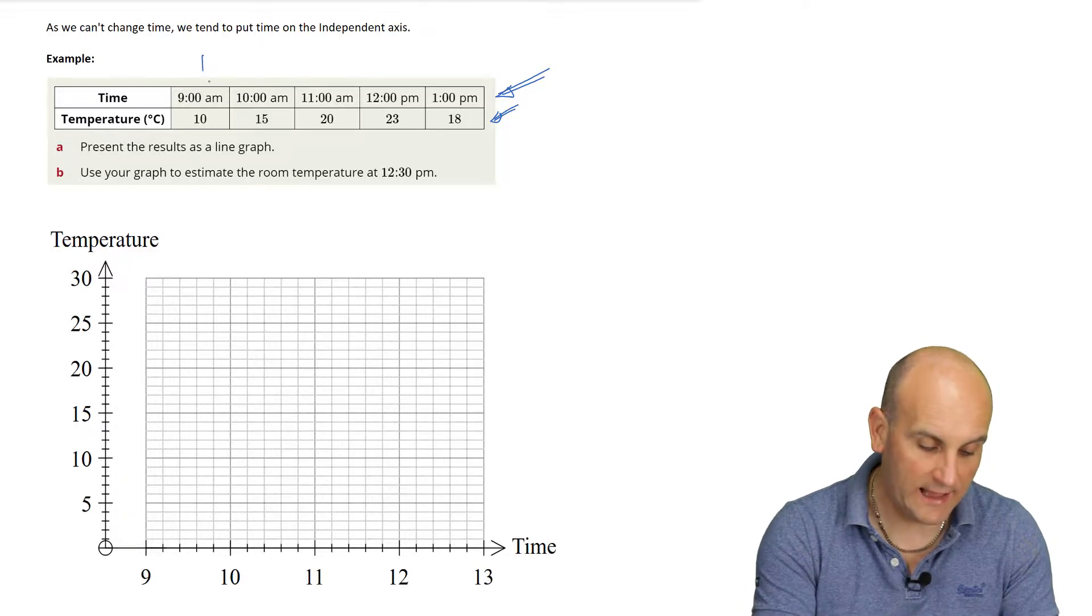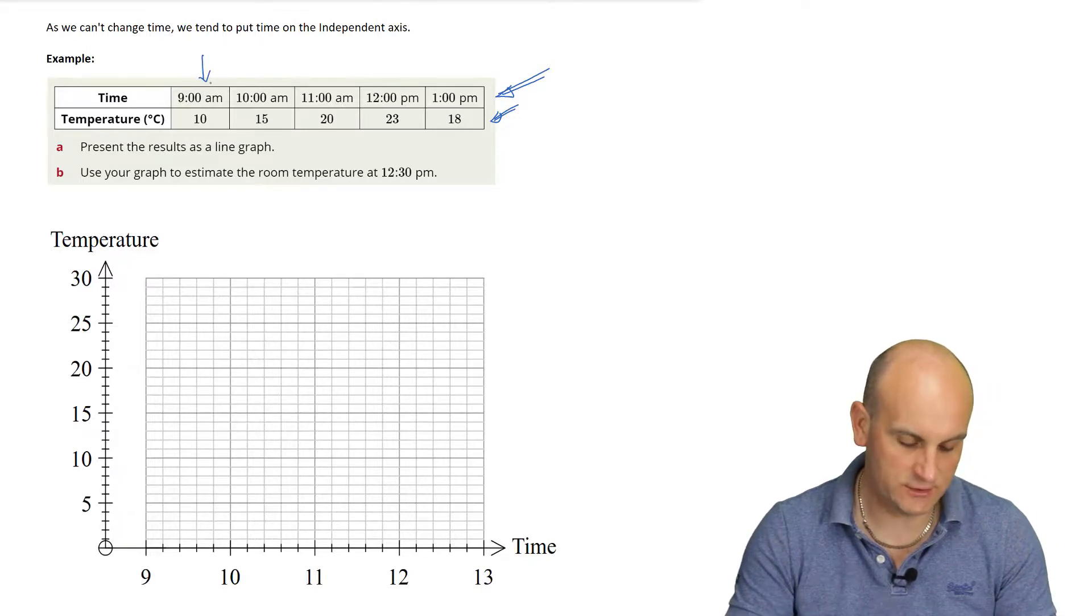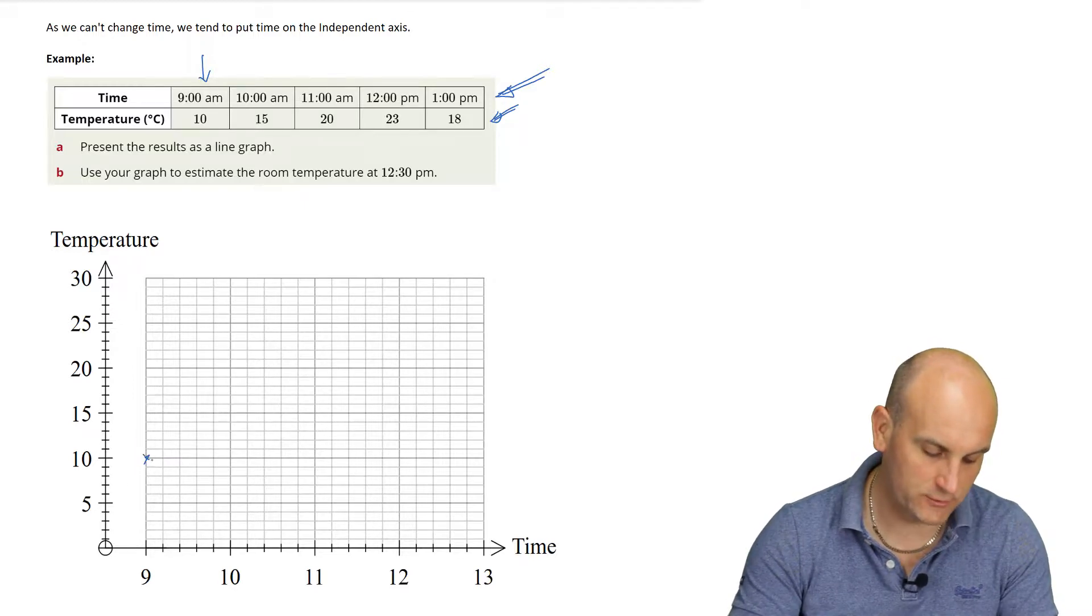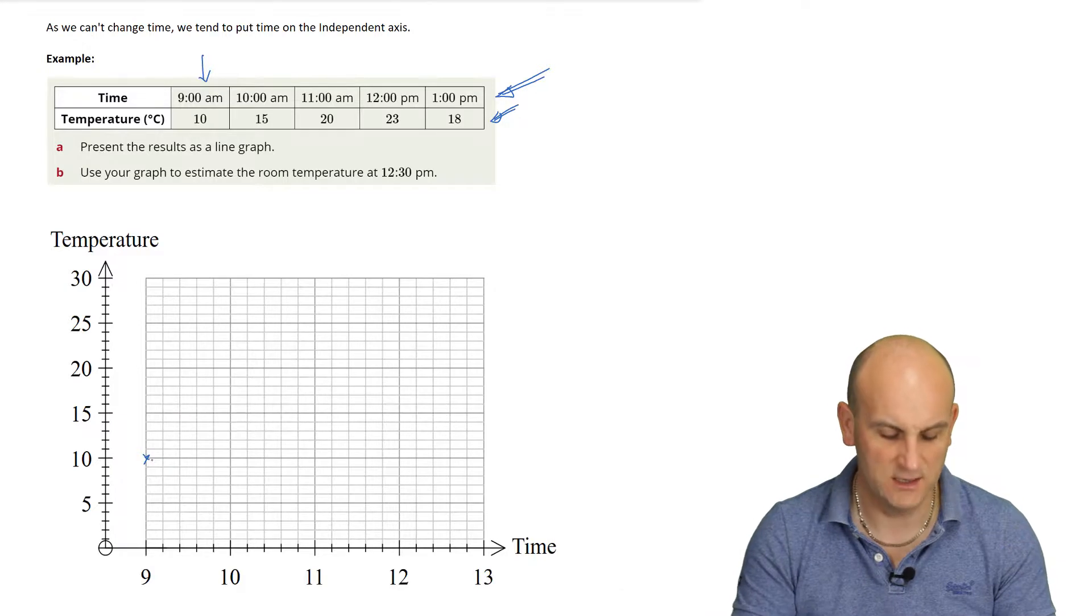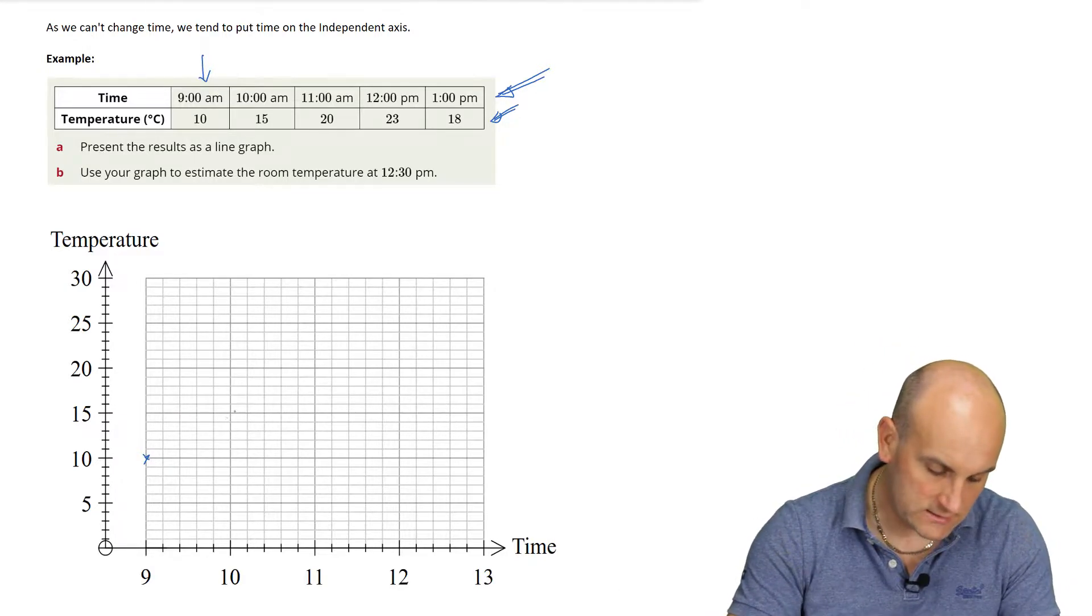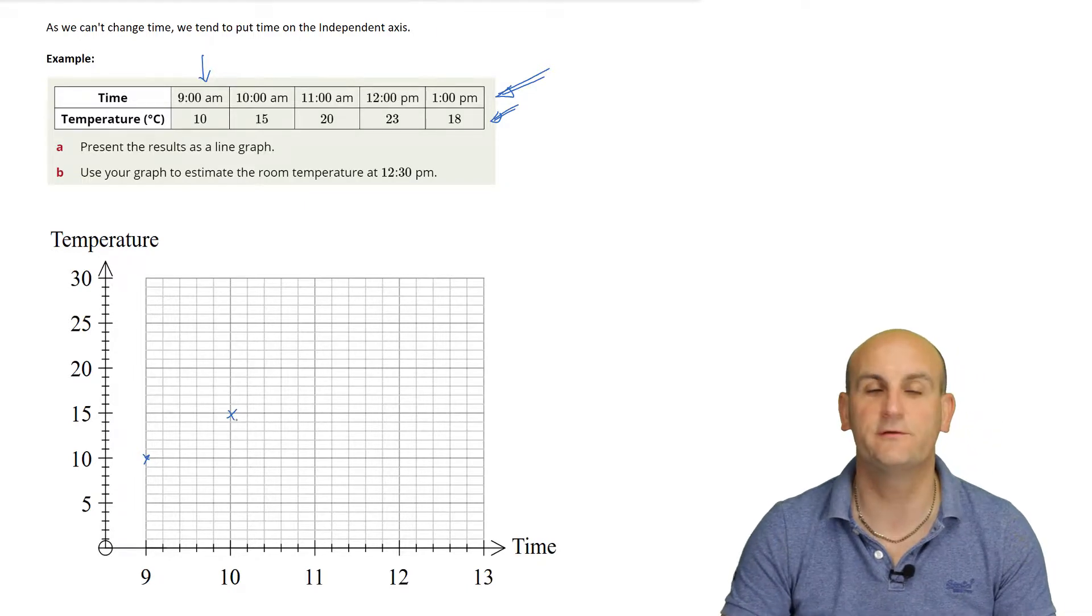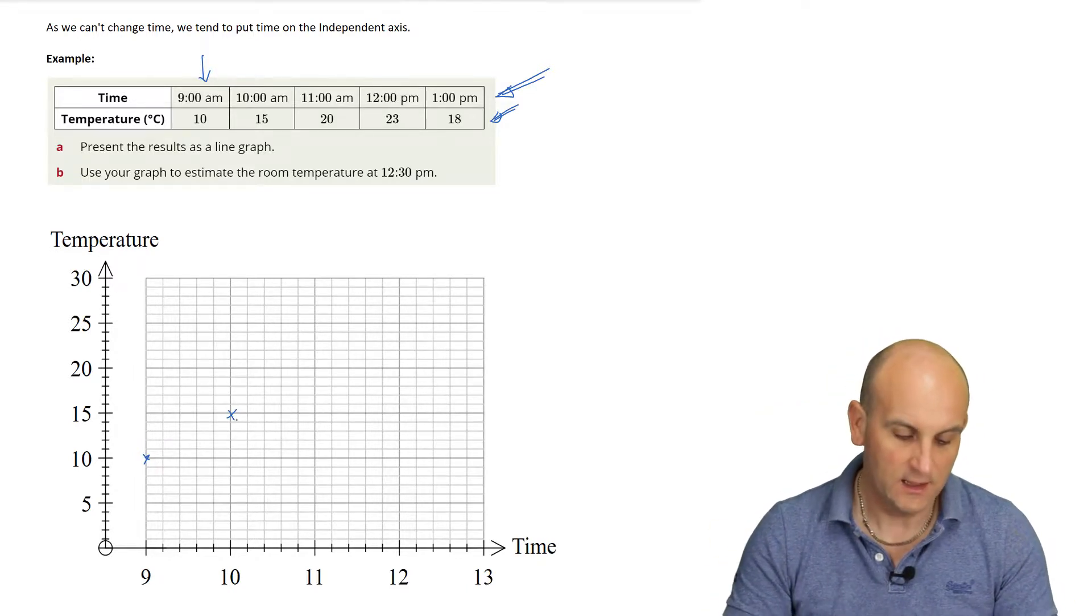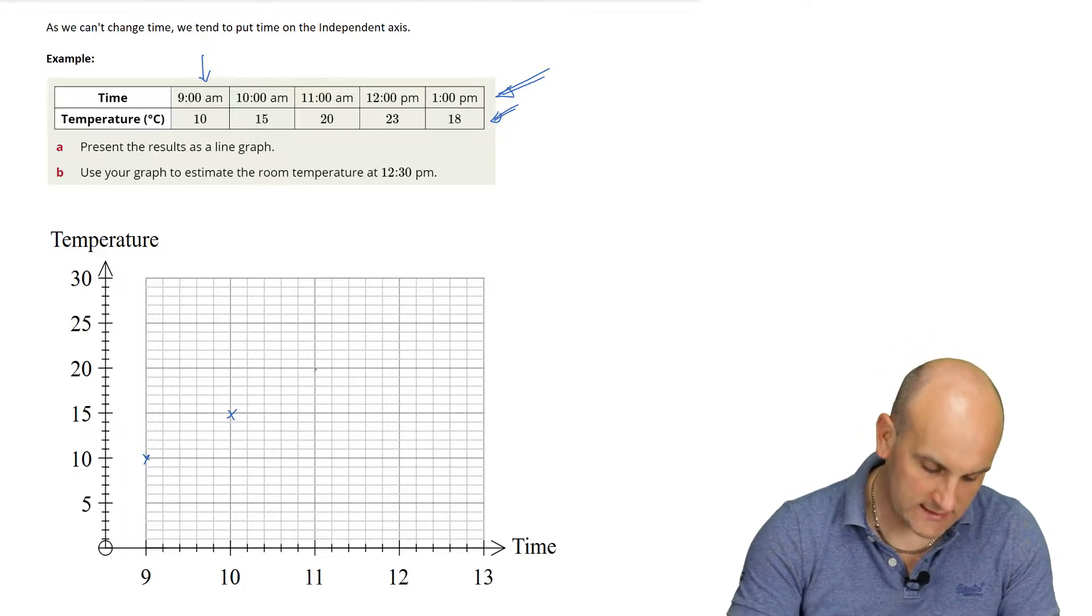So, we now look at the first value. At 9am, it was 10 degrees Celsius. There's 9am and there is my 10 degrees Celsius. Now, I've put a cross because in maths we tend to put crosses, not little dots and circles. So, there is my first one. At 10am, I was 15 degrees. So, I do a little cross at 15 degrees. Yes, it looks like a kiss because that's what I put at the bottom of my card for my mum and dad.